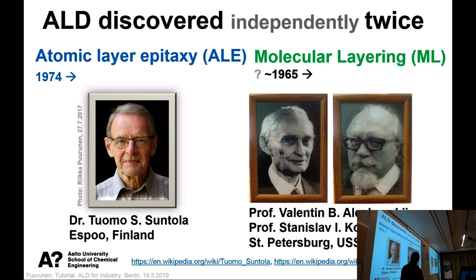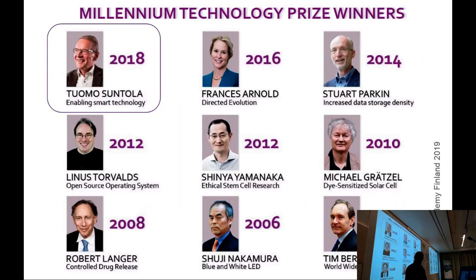The original inventors from the Russian side have already passed away. Tuomo Suntola is still going energetically. He actually received the Millennium Technology Prize for his achievements last year — a one million euro prize given every two years, and so far three Nobel Prize winners have received it. The nomination period for next time starts the first of April. It's a global prize.